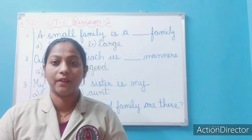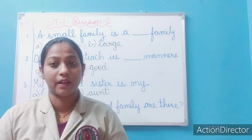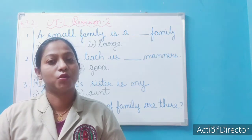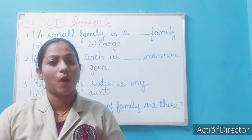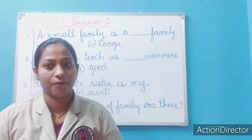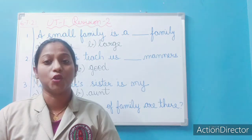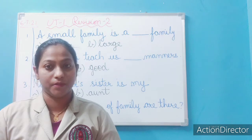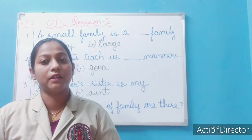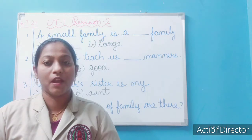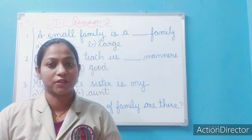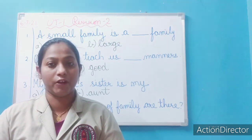In a small family, how many members are there? In a small family there are one set of parents and one or two children. In the big or large family there are five to six members. And in the joint family there are ten or more than ten people. This we have studied about the members in the different types of family.